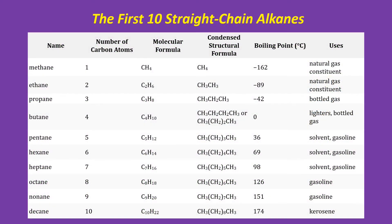These are the first ten straight chain alkanes. The most important use of alkanes is as fuel. Methane and ethane are natural gases considered to be cleaner fuels, since they produce less carbon dioxide during combustion. In the Philippines, the Malampaya Deepwater Gas to Power Project in Palawan is one of the major sources of natural gas, generating 40% of Luzon's electricity requirement. Propane and butane are also gaseous hydrocarbons that are major components of liquefied petroleum gas, or LPG.